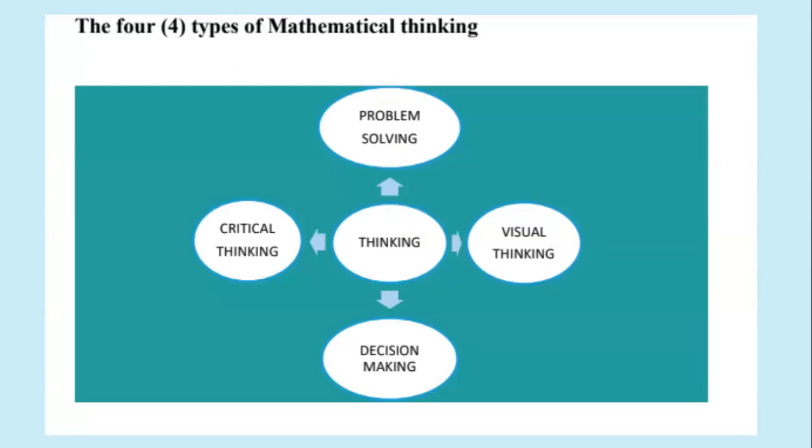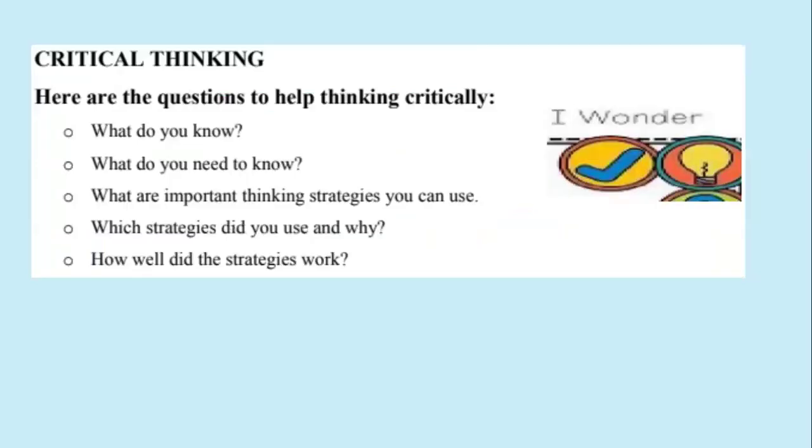Let's look at the four mathematical thinking. Those are problem solving, visual thinking, decision making, and critical thinking. Some of the questions that will help us to think critically is to think about what do we know, what do we need to know, what are the important thinking strategies we can use, what strategies did we use and why, and how well these strategies work.